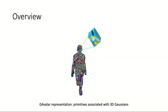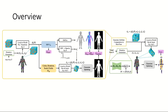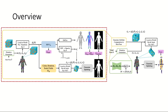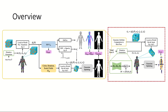Our method, Gavartar, represents an animated avatar using a collection of primitives, with each primitive associated with a set of 3D Gaussians. Our method includes two main processes. The first process computes the color, rotation, scaling, and opacity of each 3D Gaussian under the rest pose. The second process transforms the 3D Gaussians given a target pose and renders the transformed Gaussians. We introduce each in detail next.